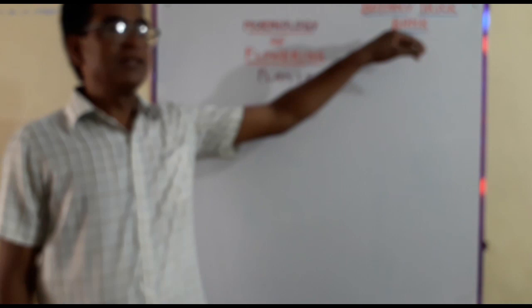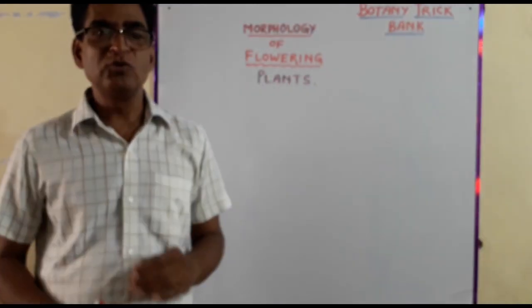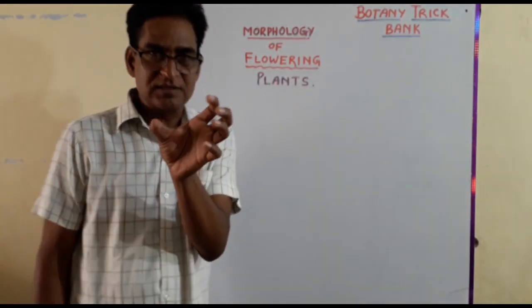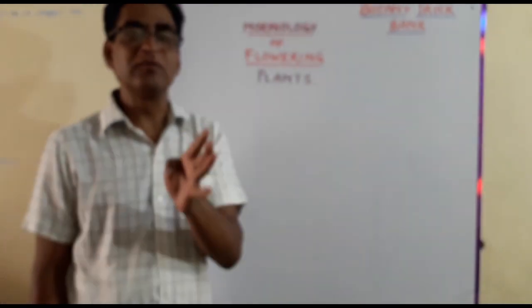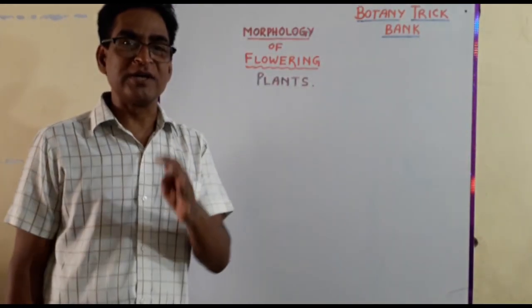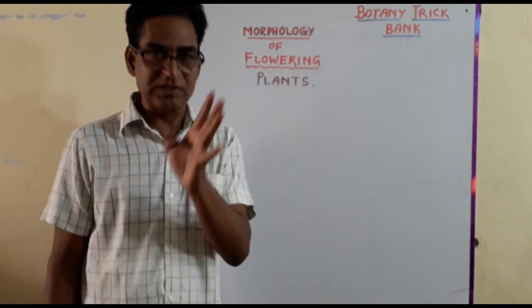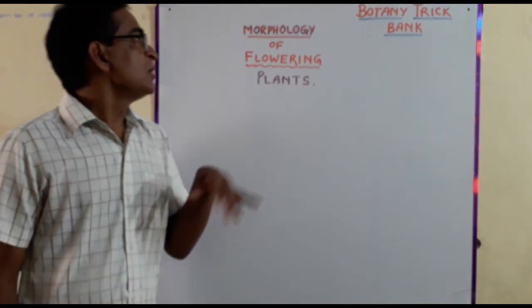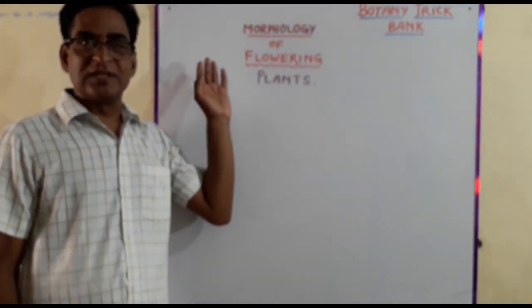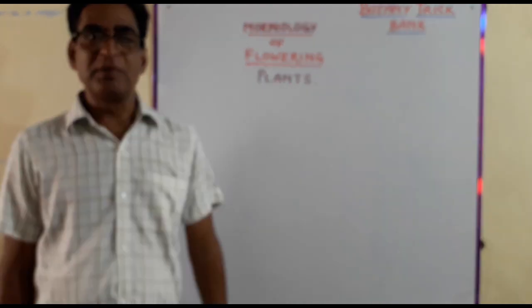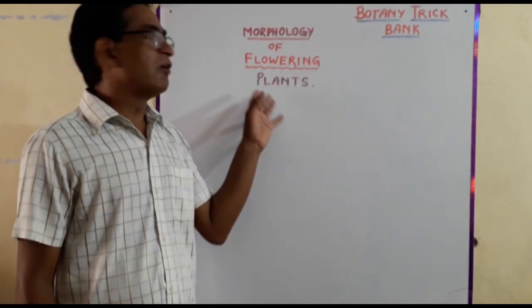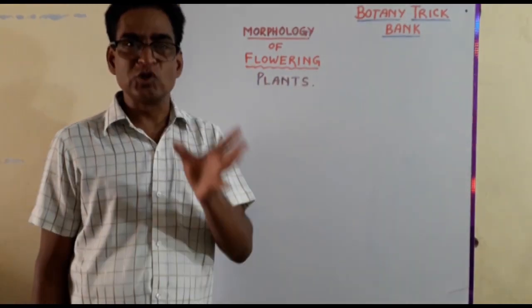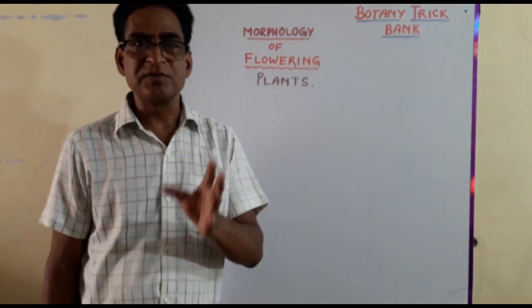Why has this name been given? It is given to make easy short tricks about the things which you have to remember for a longer time, for your main exams especially. In this chapter, morphology is about flowering plants — angiospermic plants.